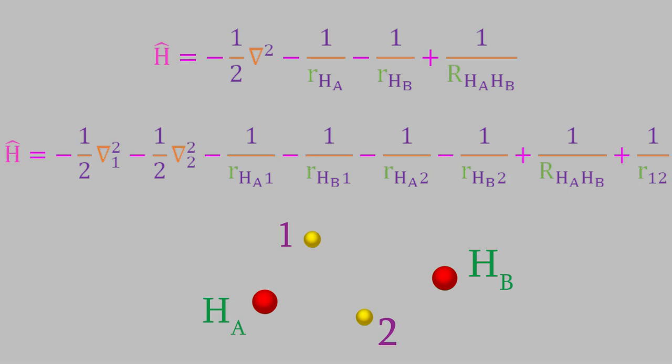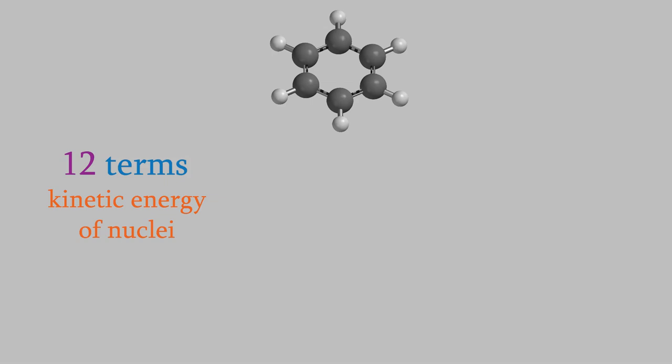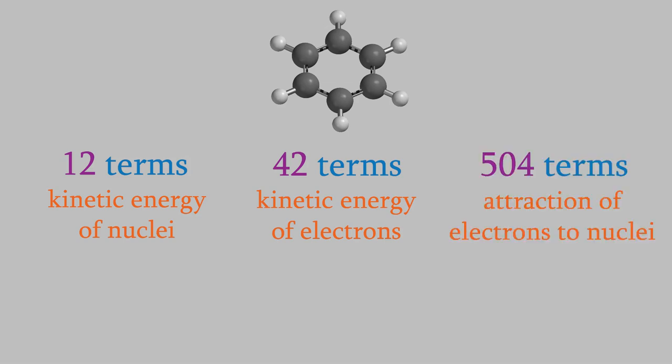For example, suppose we were looking at benzene. Benzene contains twelve atoms — six carbons and six hydrogens. That means the Hamiltonian would have twelve terms for the kinetic energy of the nuclei. Those will drop out if we apply the Born-Oppenheimer approximation. But meanwhile, there would be forty-two terms for the kinetic energies of the electrons, because that's how many electrons a benzene molecule has. The number of attraction terms between the electrons and nuclei is truly massive: each of the forty-two electrons is attracted to each of the twelve nuclei, for a total of five hundred and four terms.